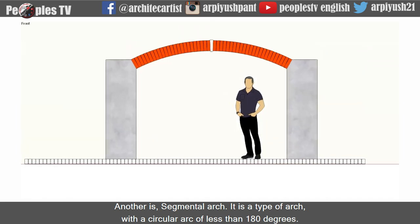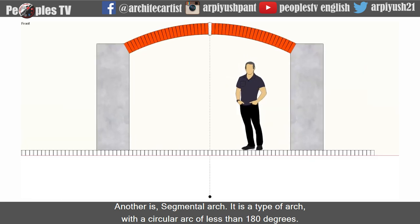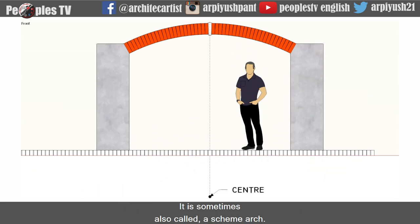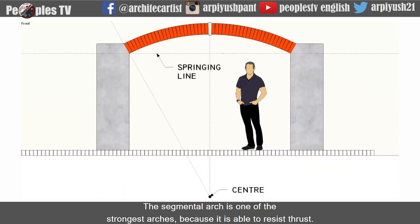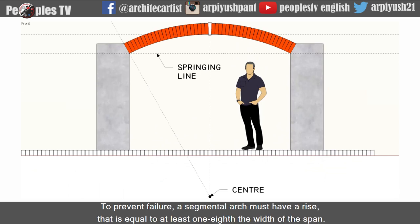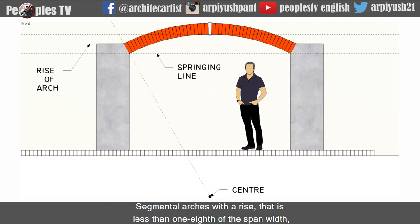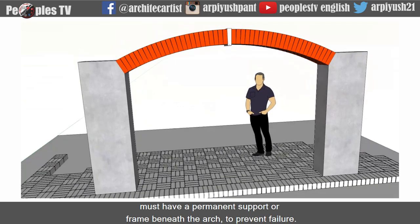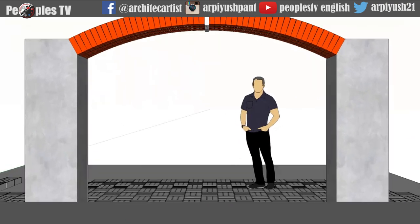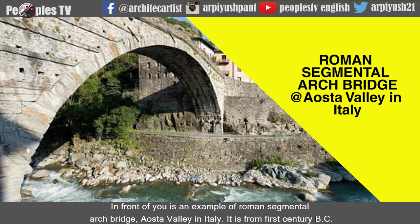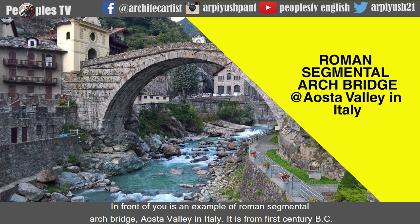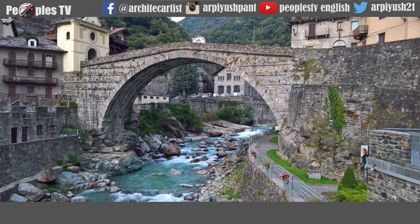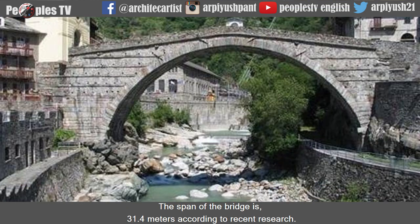Another is the Segmental Arch — a type of arch with a circular arc of less than 180 degrees, sometimes also called a scheme arch. The segmental arch is one of the strongest arches because it is able to resist thrust. To prevent failure, a segmental arch must have a rise that is equal to at least one-eighth the width of the span. Segmental arches with a rise less than one-eighth of the span width must have a permanent support or frame beneath the arch. In front of you is an example of a Roman Segmental Arch Bridge in Aosta Valley in Italy, from the 1st century BC, with a span of 31.4 meters according to recent research.